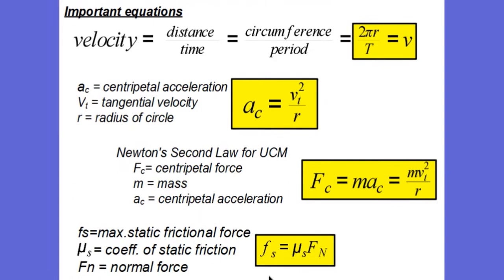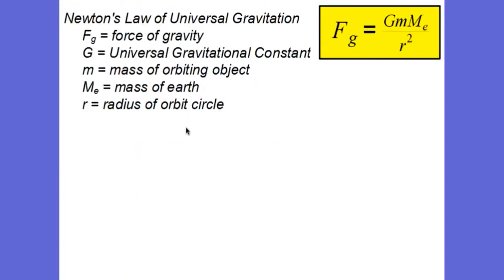Another important equation we'll be using is one we're already familiar with, and that's our equation for friction. Friction is equal to mu times the normal force. And lastly, another equation we'll be using is Newton's universal law of gravitation, which says that the force of gravity between two objects is proportional to their mass and inversely proportional to the distance between them squared. We're going to apply this equation to satellite problems that are orbiting the Earth. In that case, the force that holds the satellite in orbit — its centripetal force — is the gravitational force, equal to the gravitational constant times the mass of the satellite times the mass of Earth divided by the radius of the orbital circle squared.